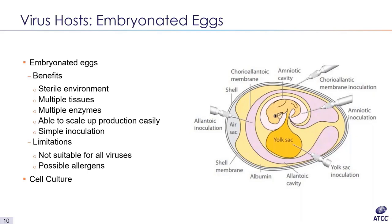A virus commonly grown in eggs is human influenza virus. This virus is injected into the allantoic fluid of the egg and incubated for two to three days at 33–35 degrees Celsius, which is the relative temperature of our upper respiratory tract, and then the allantoic fluid is harvested. A limitation with eggs is that it's not a suitable host for all viruses, and the diversity of tissues, proteins, and enzymes present can be problematic — for example, during vaccine production, people with egg allergies would not be able to receive the vaccine.